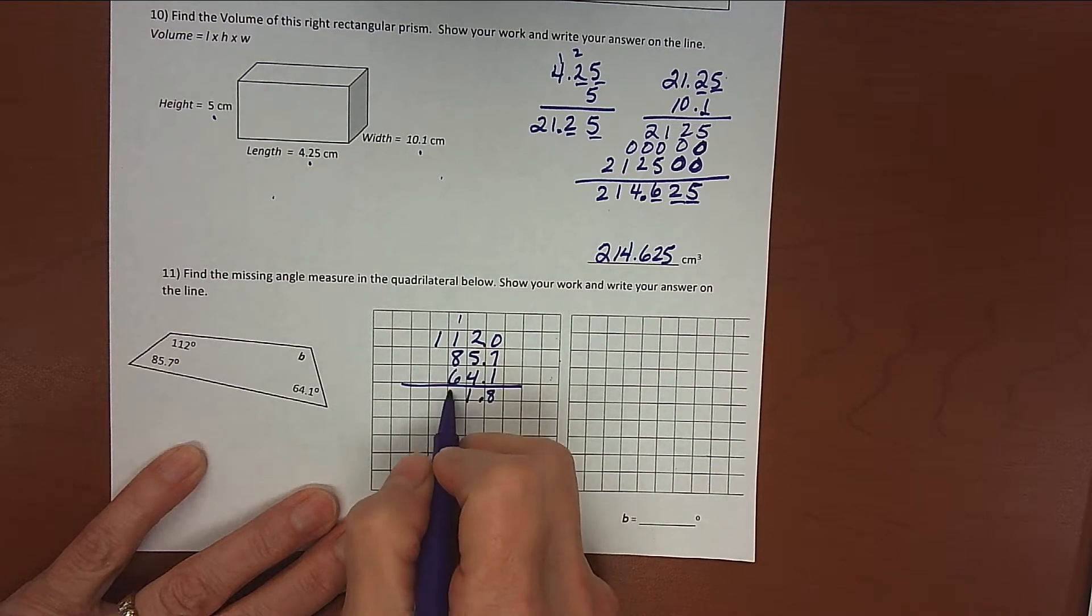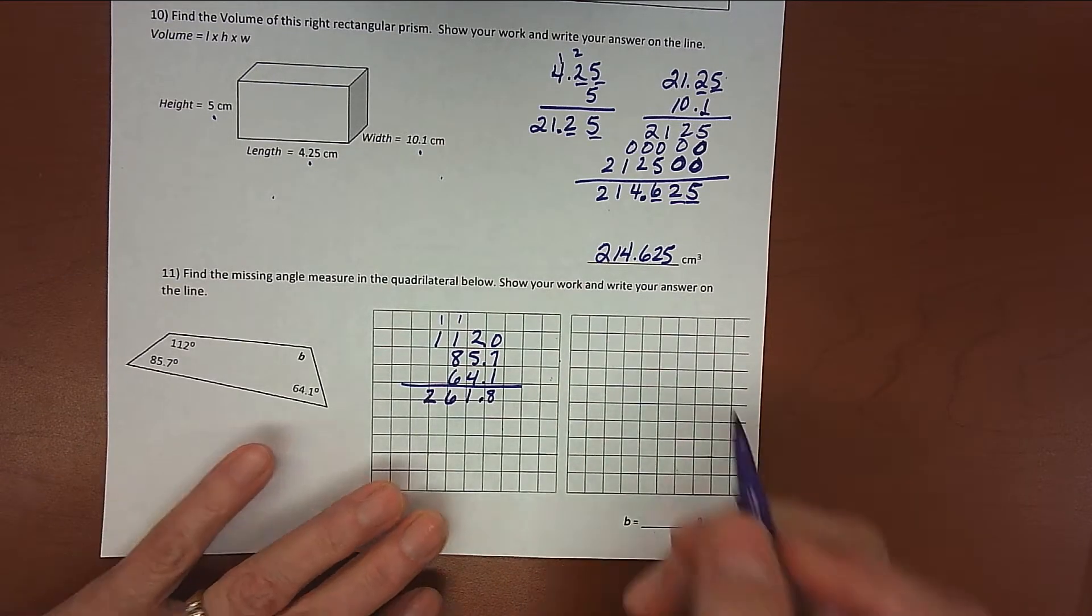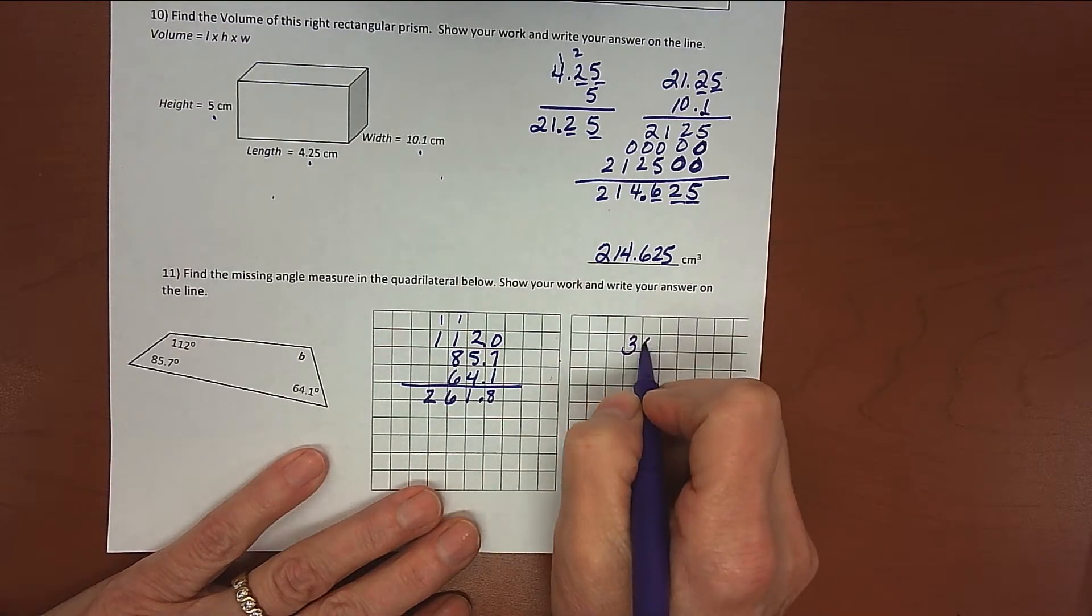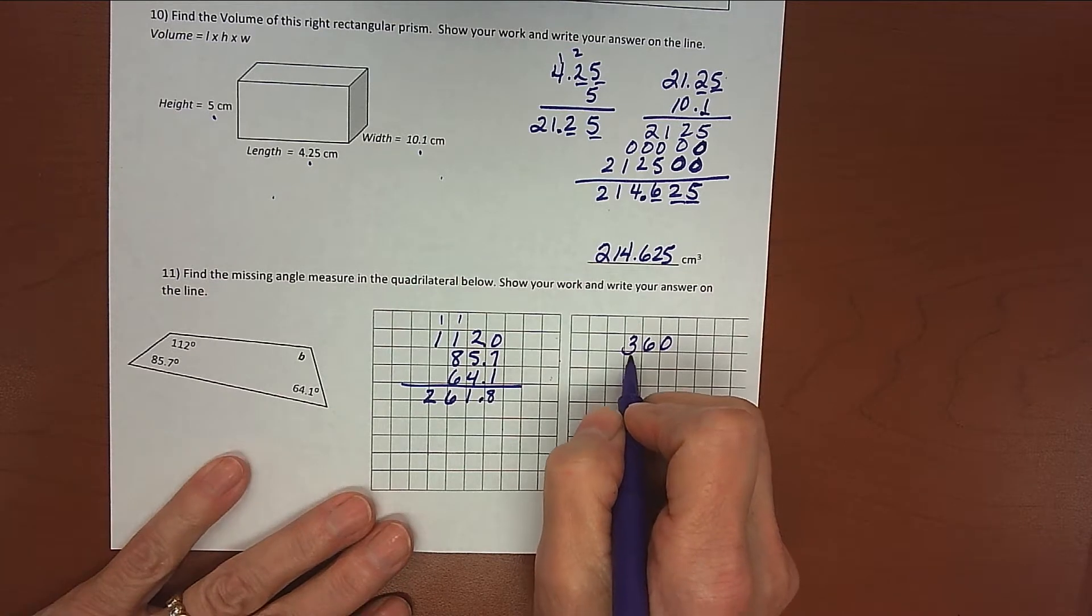Carry my 1. 8, 9, 10, 16. Carry my 1. I get 261 and 8 tenths. Then I'm going to take that and subtract from 360 because we know that all four angles in a quadrilateral add up to 360.